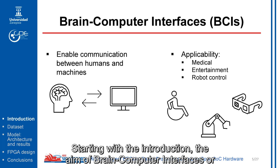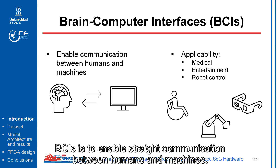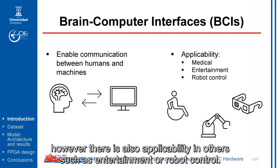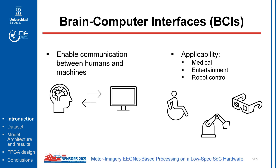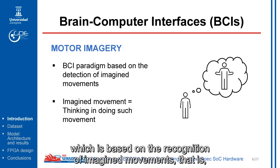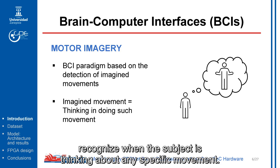Starting with the introduction, the goal of brain-computer interfaces, or BCIs, is to enable straight communication between humans and machines. The most common field of application is the medical field; however, this has applicability in others such as entertainment or robot control. A highly-used BCI paradigm is motor imagery, which is based on the recognition of imagined movements — that is, recognizing when the subject is thinking about a specific movement.